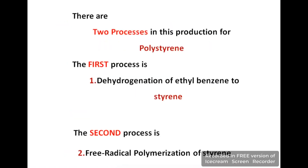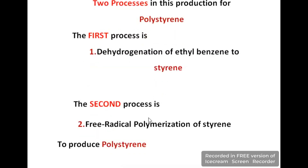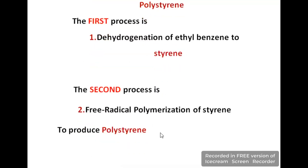At industrial level there are two processes for the production of polystyrene. The first process is dehydrogenation of ethylbenzene to produce styrene, and the second one is free radical polymerization of styrene to produce polystyrene.